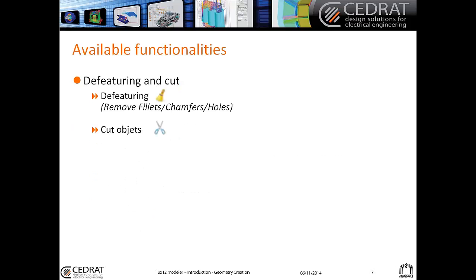The last functionalities of the 3D modeler include the possibility to make de-featuring and to cut objects. De-featuring allows you to remove fillets, chamfers, and holes. You can also cut your object using reference planes.